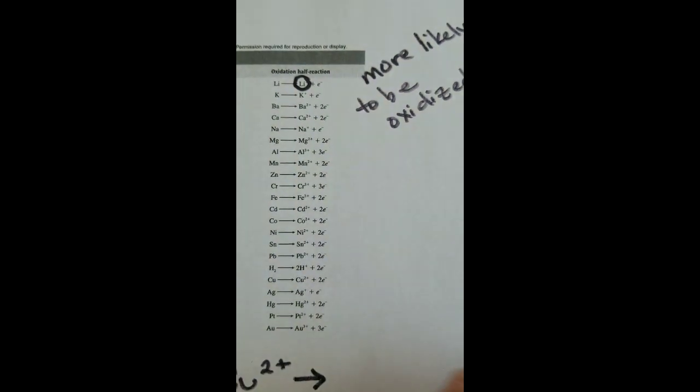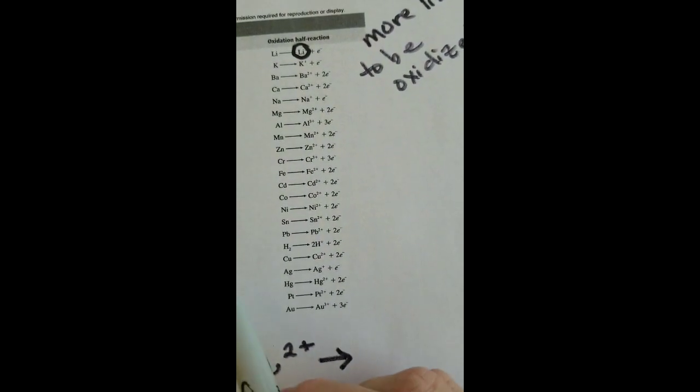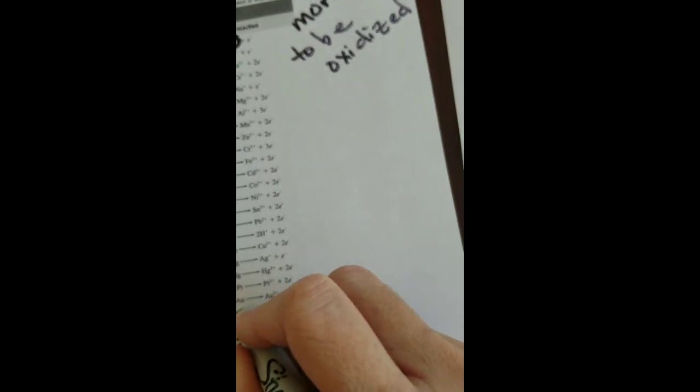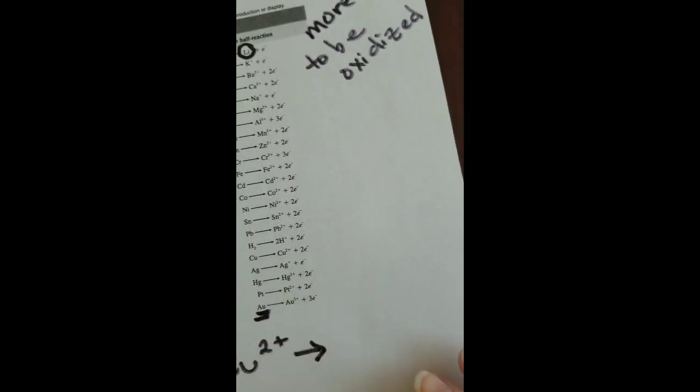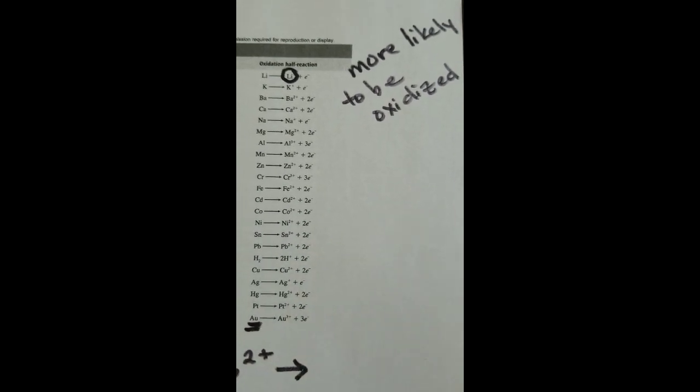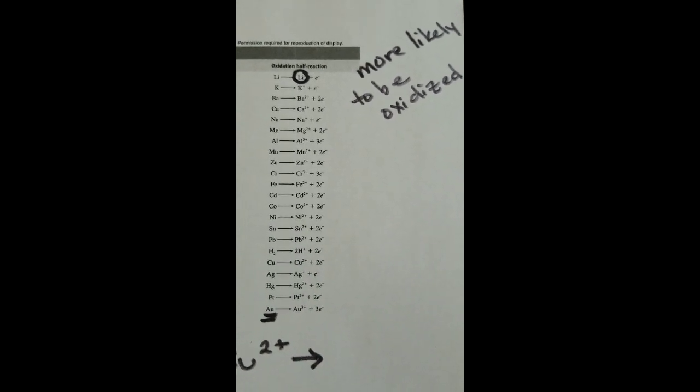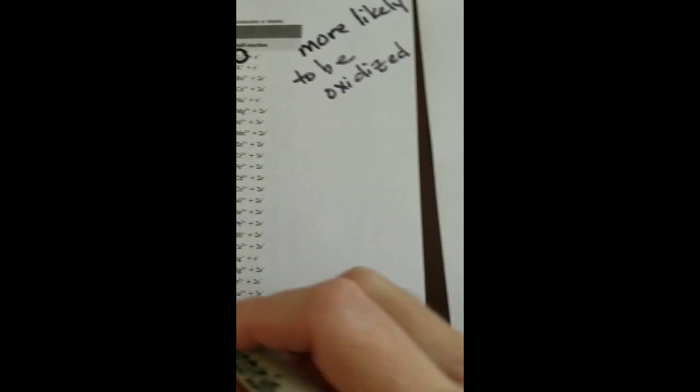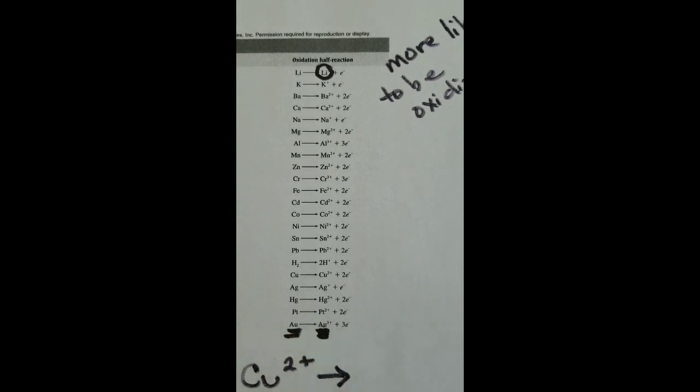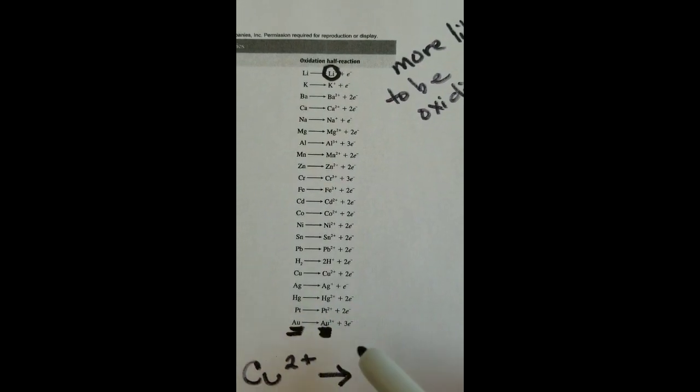Likewise, when you look at the bottom of the chart, you see things like gold, platinum, mercury, silver, things that we often see as solids. So here, you have things that are more likely to take the electrons. So they're more likely to hang out and be like, so lithium, I know you always wanted to be an ion. And I, gold, as long as it is an ion, I would happily take your electrons and turn myself into a solid.